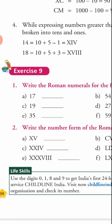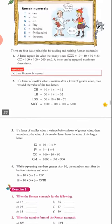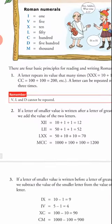Another example: 18. We break it into 10 plus 8. Ten is X, and 8 is 5 plus 3, so we write V and then I three times — giving us XVIII. Go through these rules carefully, learn the seven alphabets, and keep these rules in mind.